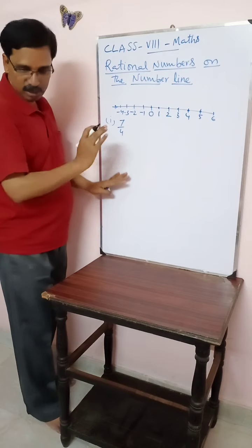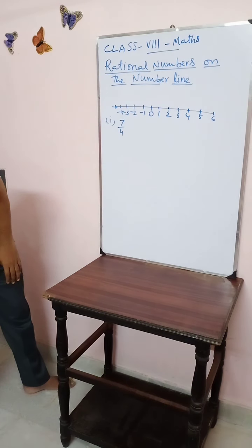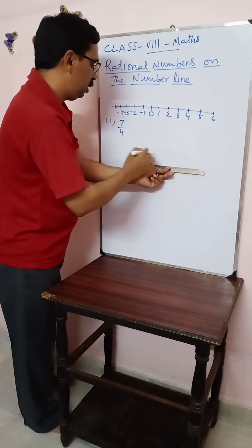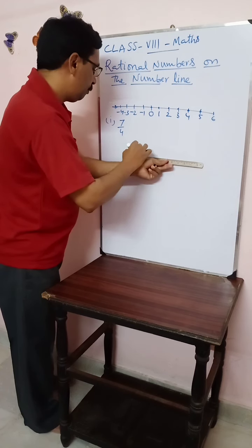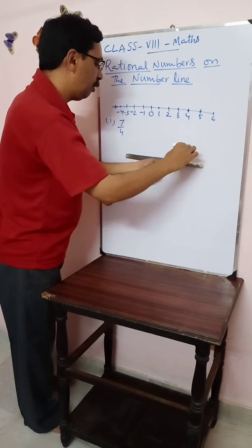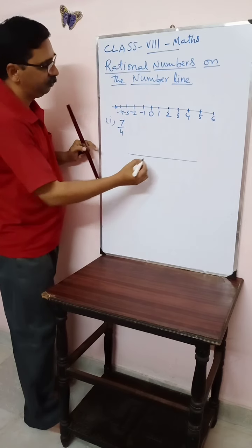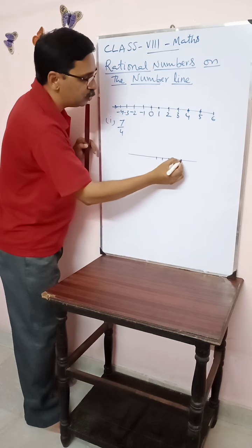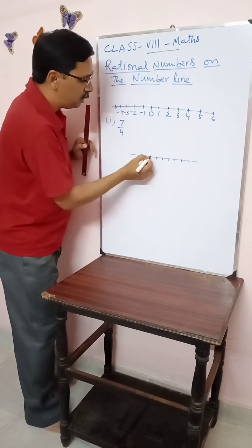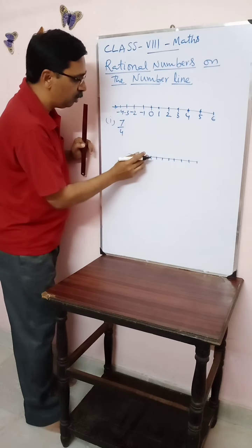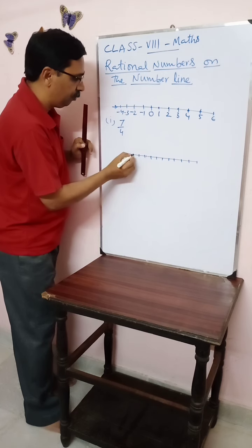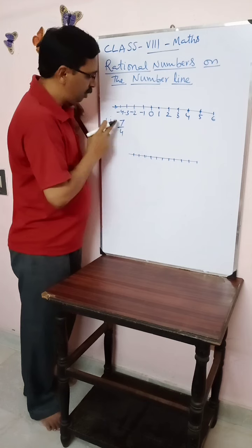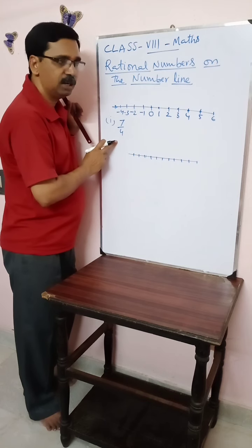Now take a number line. Let me draw — I'll take a scale. Let us draw the number line as you usually draw. The number line is drawn. Now measure unit distances and mark them, so each point between any two points has the same distance.